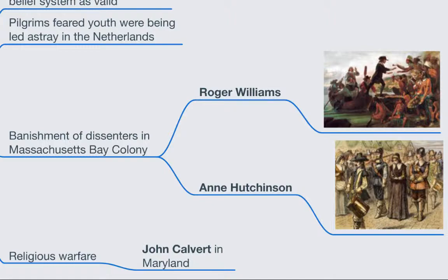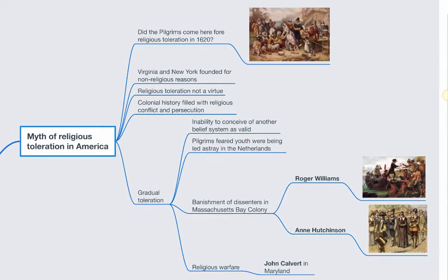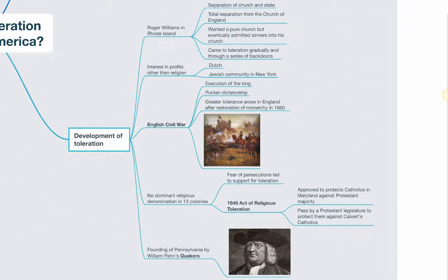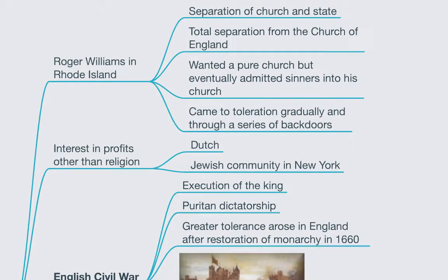Obviously it's difficult to argue that there was toleration in the Americas, or that even the Pilgrims and the colonists arrived here merely because they wanted to be more tolerant with their religion. As we look at the development of toleration, religious toleration was partially established by Puritan dissenters, most notably Roger Williams, who after being banished from Massachusetts Bay founded Rhode Island and is known for his insistence on the separation of church and state, as well as his opposition to forced worship.